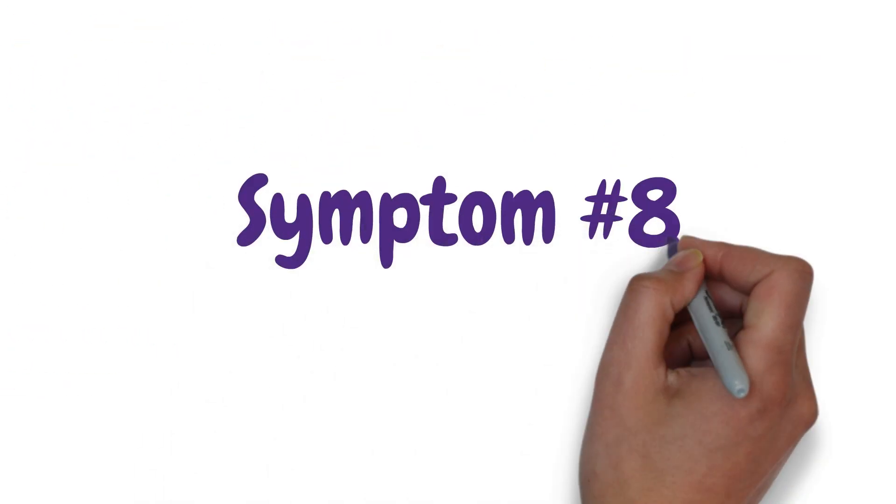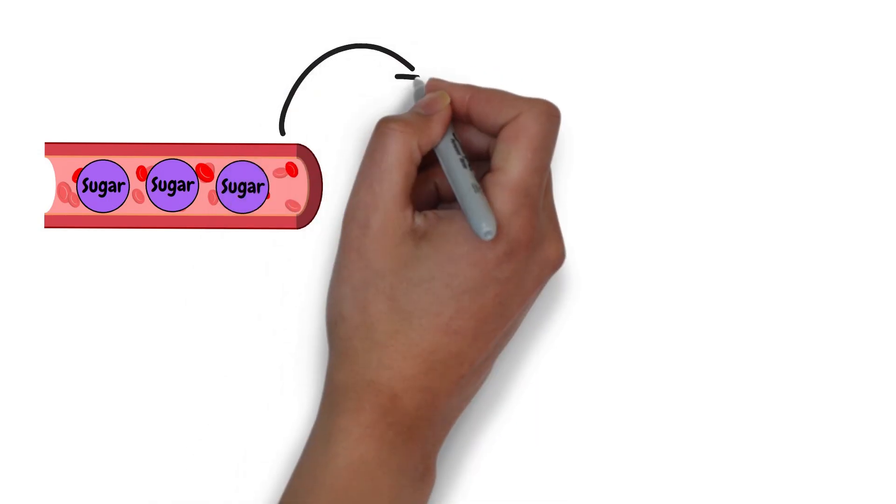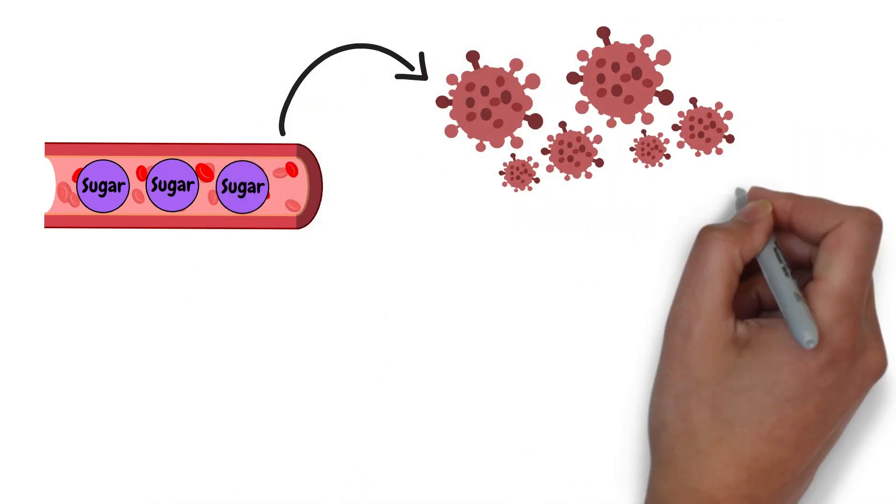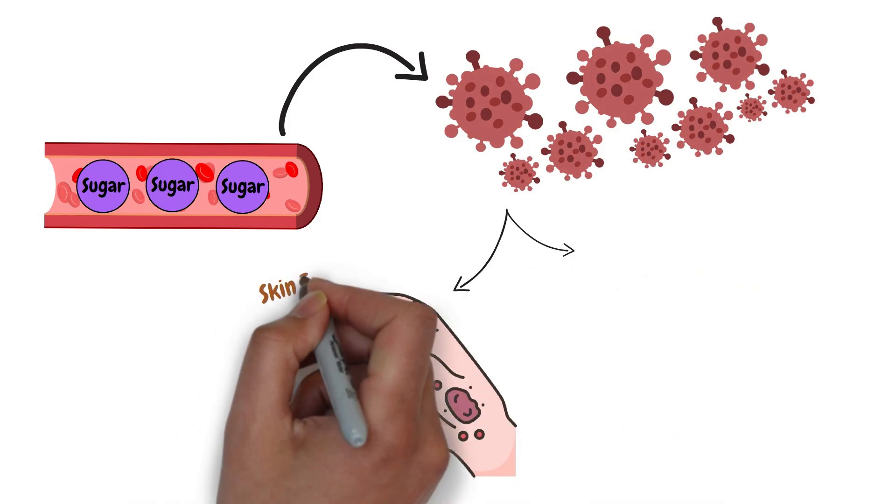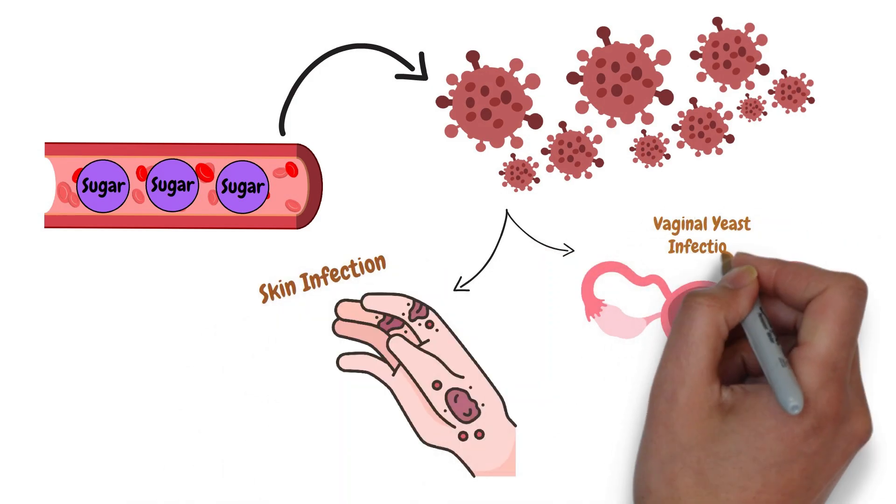Symptom number 8 is frequent infections. High blood sugar gives pathogens a favorable environment to multiply in. This results in frequent infections. For example, skin infection and or vaginal yeast infection.